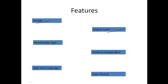Dynamically typed means we need not declare anything — an assignment statement binds a name to an object, and the object can be of any type. Platform independent means you can run it on any operating system. High-level language means you write English words to develop programs. Open source means it is freely available, as you already know.